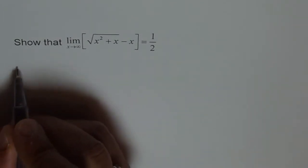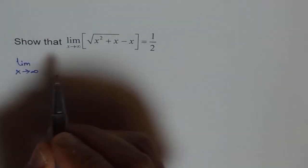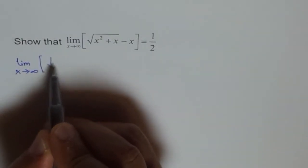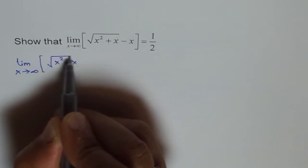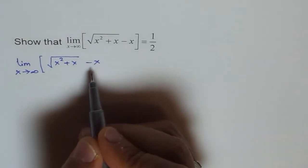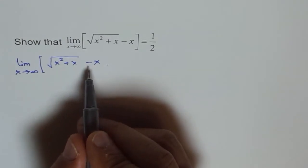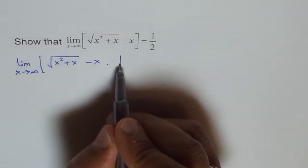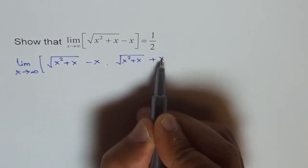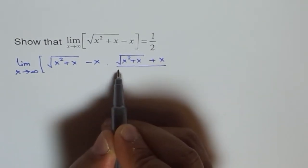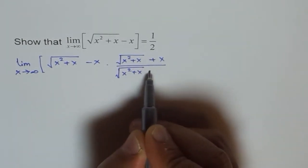We have here the limit as x approaches infinity for the function square root of x squared plus x minus x. When you rationalize it, we multiply and divide by its conjugate, which is square root of x squared plus x plus x, divided by square root of x squared plus x plus x.